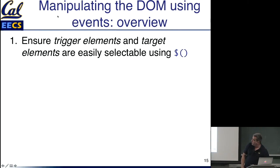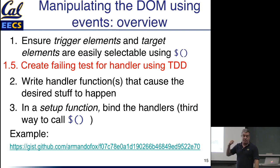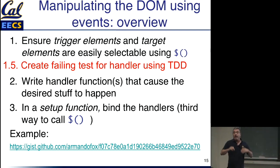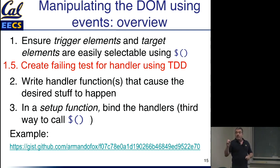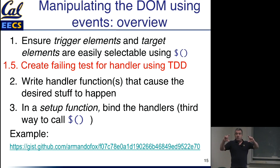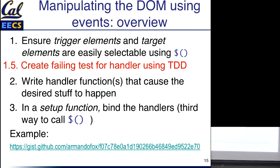The one step I conveniently left out is: if we're following the TDD approach, then before we write the handler functions we should think about writing a test that checks if the right thing happened. That example is really simple — it might be overkill to write a test for it. But you can imagine: the thing you're trying to test is that when somebody clicks the checkbox and it changes state, if it's changing from unchecked to checked then the text should appear, and if it's vice versa, the text should disappear. In a few more slides, I'll show you exactly how you can capture that behavior in a test using Jasmine, which looks a whole lot like RSpec.